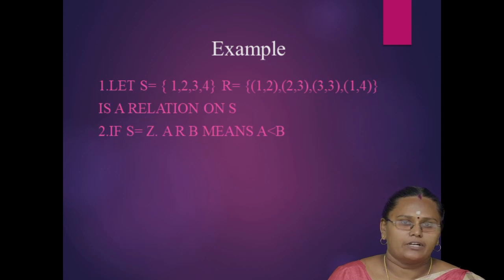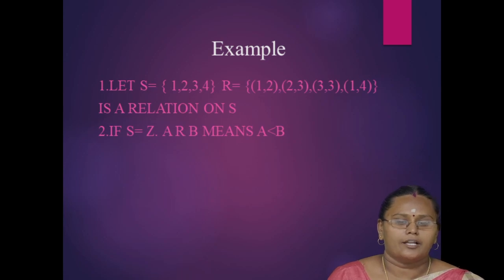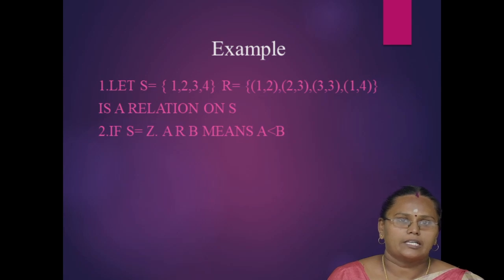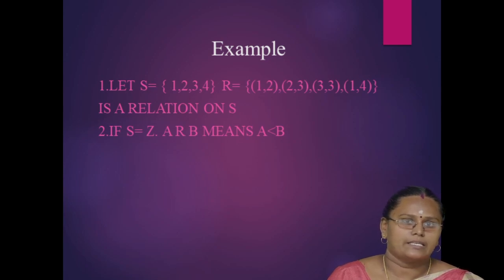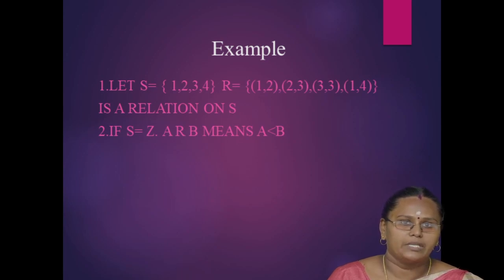For example, consider S = {1, 2, 3, 4}. Then R = {(1,2), (2,3), (3,3), (1,4)} is a relation on S. Second example: if S = Z, where Z is the set of all integers, then A related to B means A is less than B.